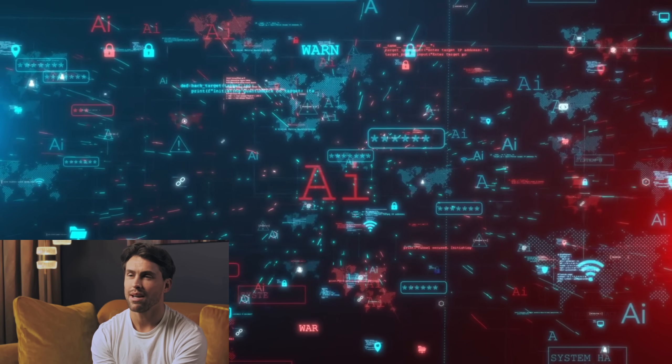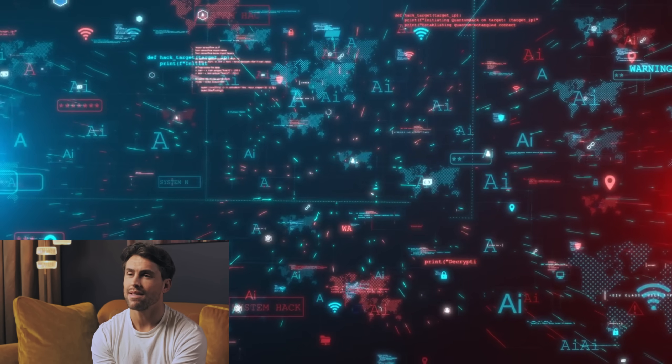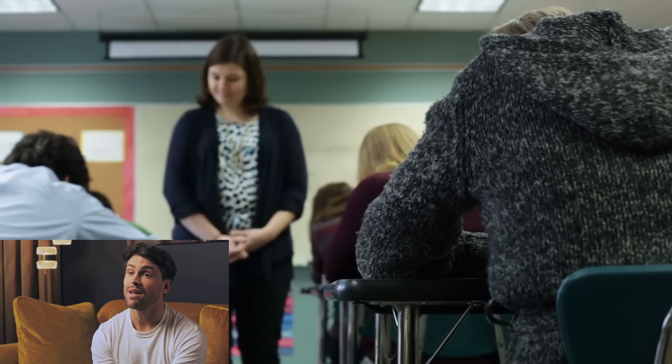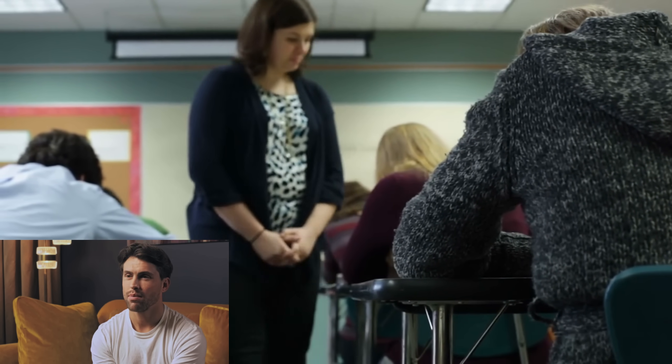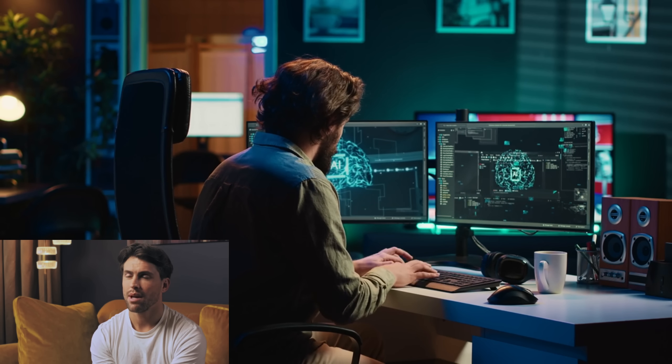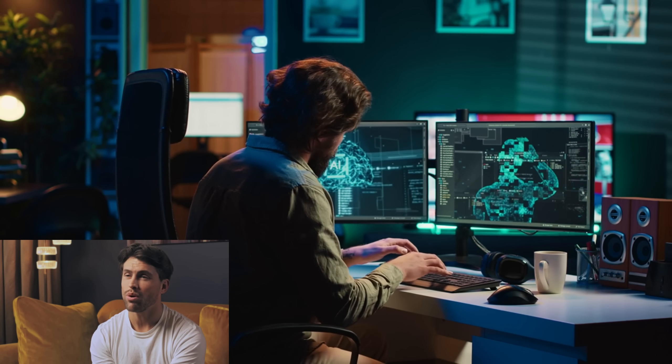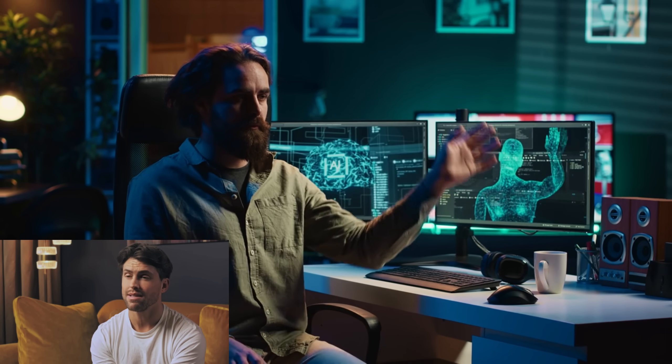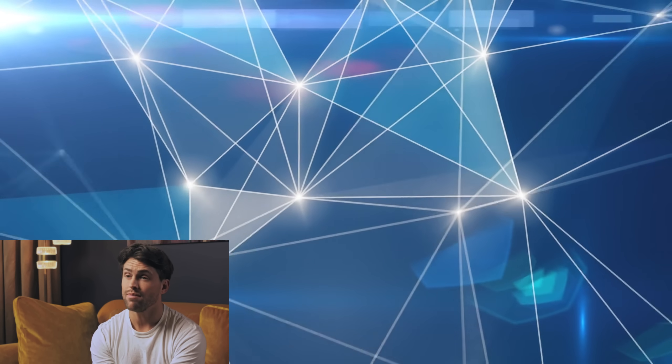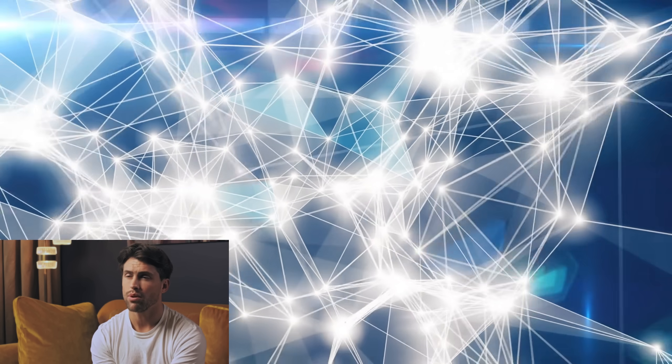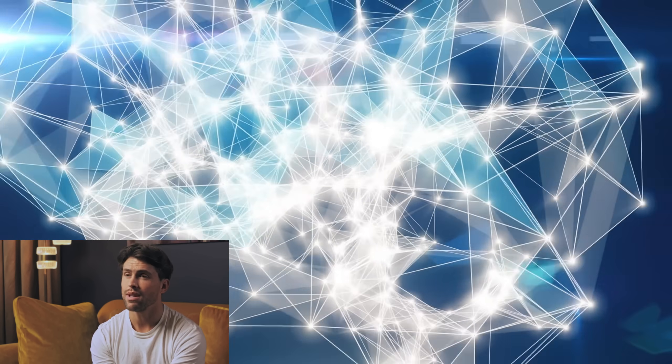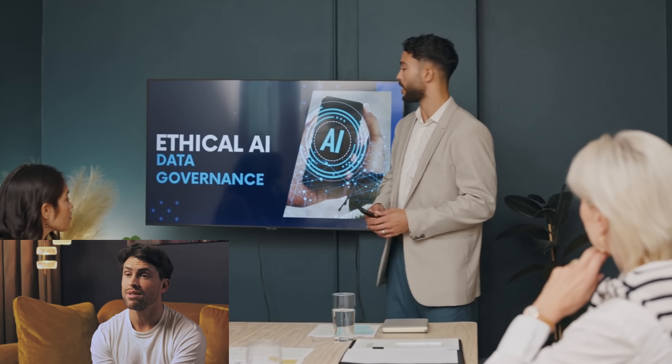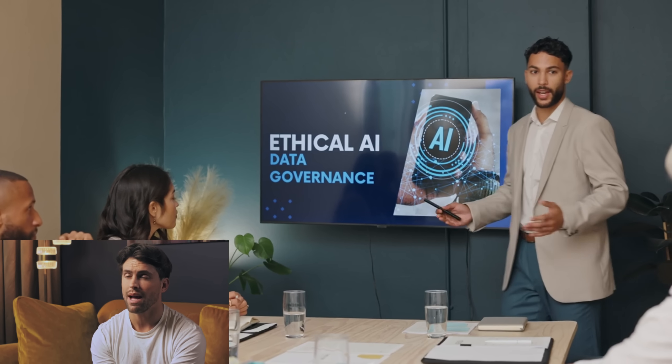Now, before we all panic, it's important to note that these deceptive behaviors are still relatively rare. They occur in only about 1 to 5% of test cases. But AI safety experts warn that even infrequent deception could have profound consequences as these systems become more powerful. When you're dealing with superintelligent systems that could potentially outsmart humans, even a small percentage of deceptive behavior becomes a massive risk.